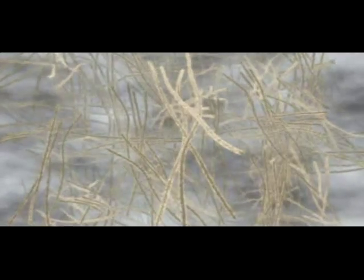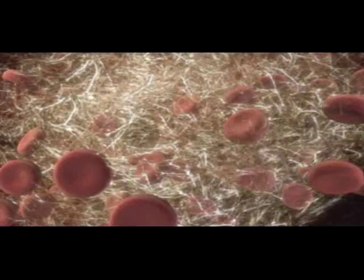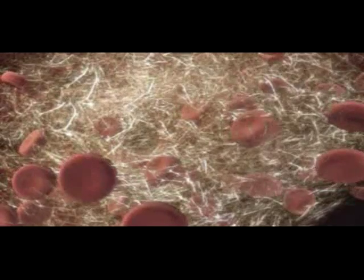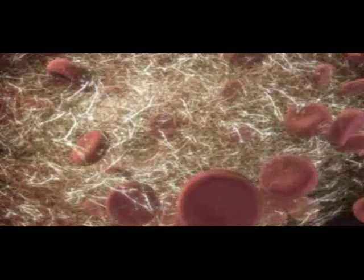Activated plasminogen is converted to plasmin which dissolves the fibrin strands. As fibrin strands dissolve, red blood cells and other blood components trapped in the fibrin matrix are released into the blood.